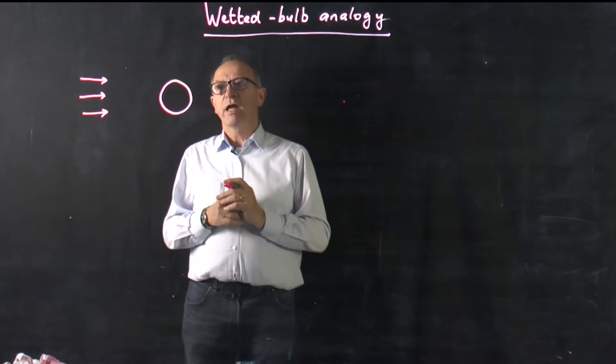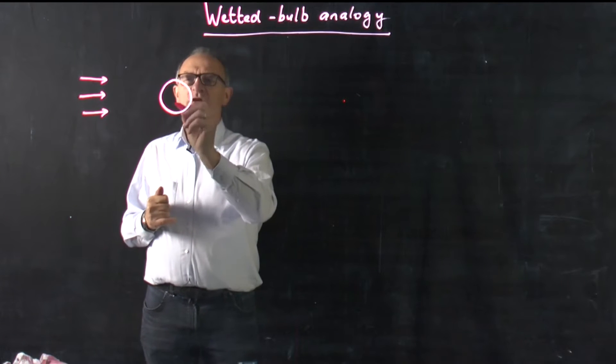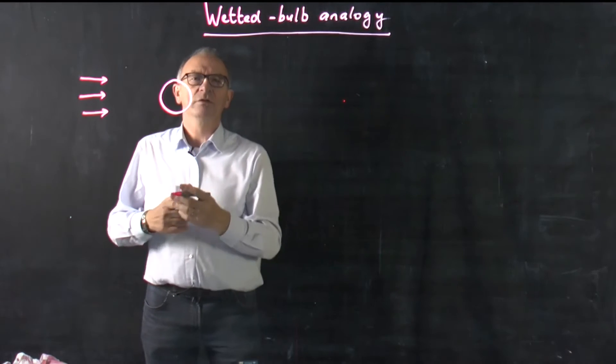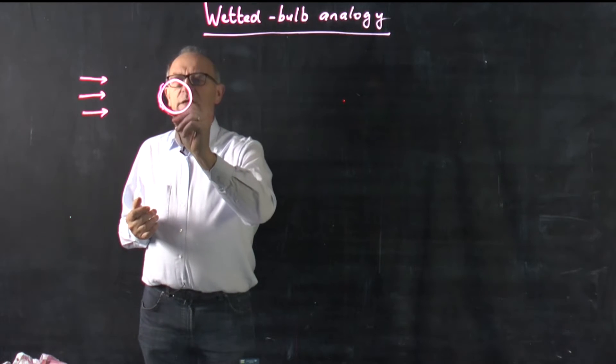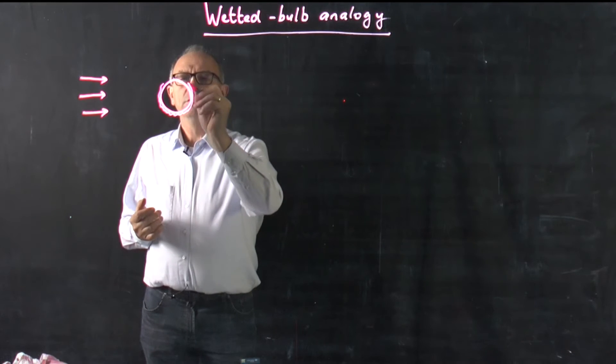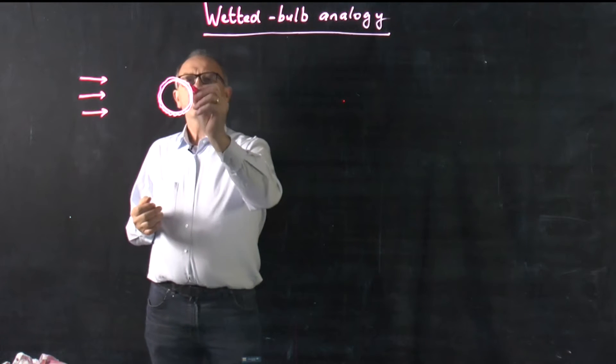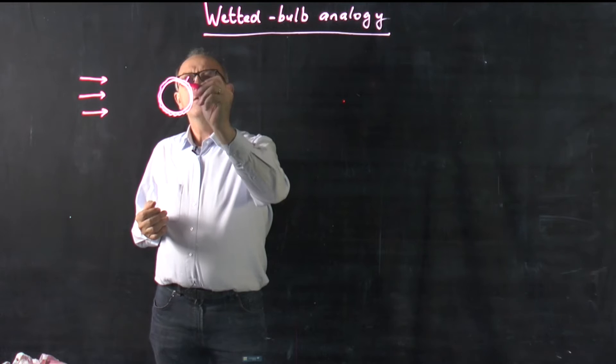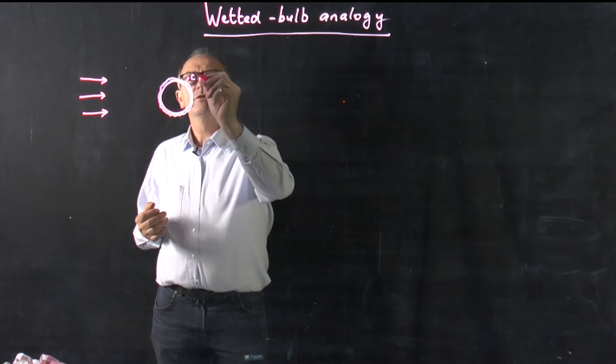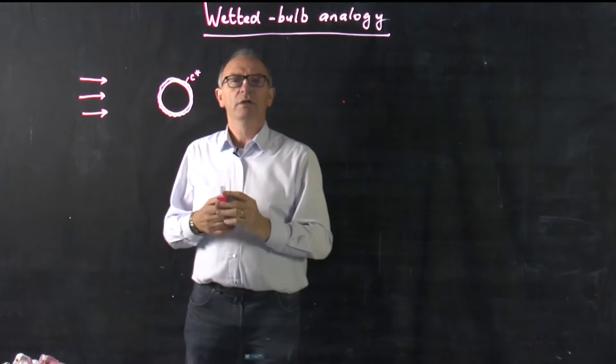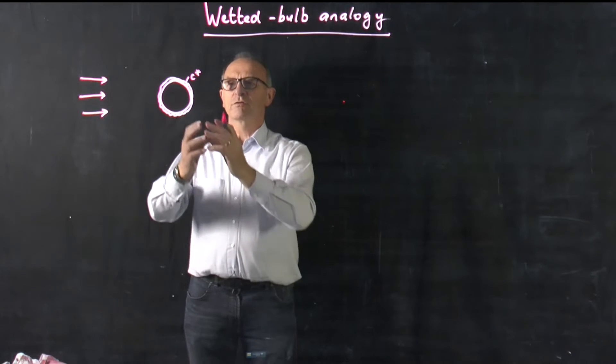But perhaps you didn't realize that you can also apply this for, for example, dissolving crystals in a liquid. So in that case, you get similar to the evaporating droplet, you get a small dissolving fluid here with a concentration C star, we call it. Let's say that's the concentration around the surface of this crystal.